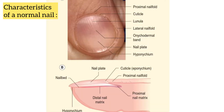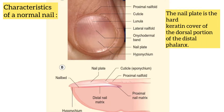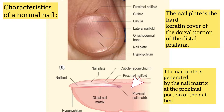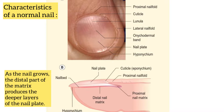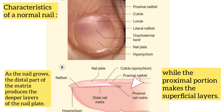Let us talk about characteristics of the normal nail. The nail plate is the hard keratin cover of the dorsal portion of the distal phalanx. The nail plate is generated by the nail matrix at the proximal portion of the nail bed. As the nail grows, the distal part of the matrix produces the deeper layers of the nail plate while the proximal portion makes the superficial layers.